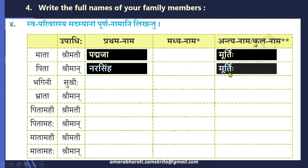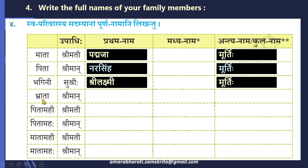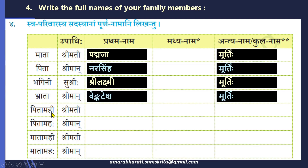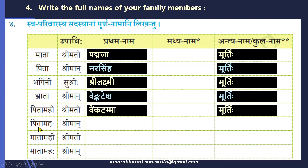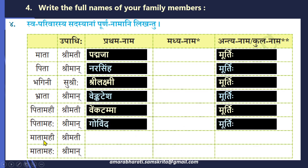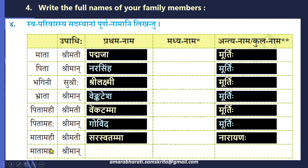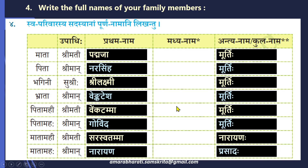Bhagini, sister — Shrimati Lakshmi Murthi. Brata, brother — Shriman Venkatesha Murthi. Pitamahi, father's mother — Shrimati Venkatamma Murthi. Pitamaha, father's father — Shriman Govinda Murthi. Matamahe, mother's mother — Shrimati Saraswatamma Narayana. Matamaha, mother's father — Shriman Narayana Prasadaha. This is how you fill up the names of your family members.